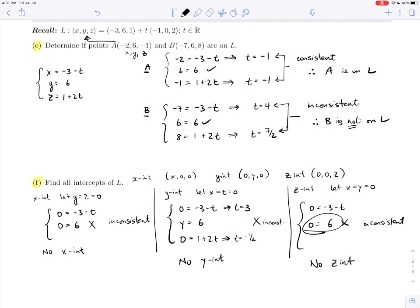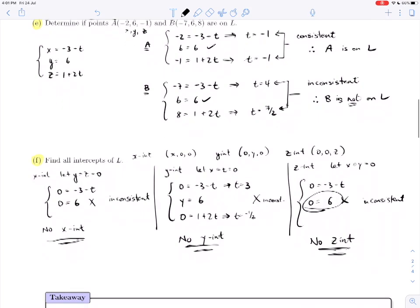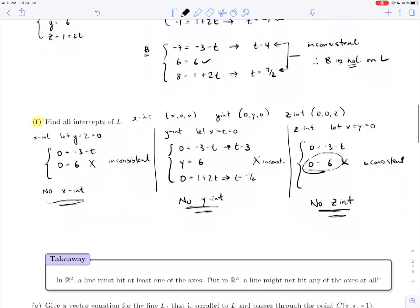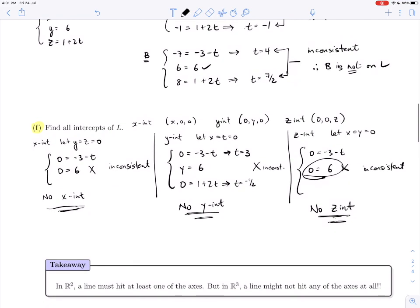That might be a little surprising to you. In calculus and high school, it was very unusual for a line not to have an intercept. In fact, a line in ℝ² must hit at least one of the axes—it must. But in ℝ³, a line might not hit any of the axes at all. That's a little bit of foreshadowing of what's coming next: there are things that behave maybe a little bit differently than you have seen before, because ℝ³ is much bigger. There's more space around for the objects to live in.